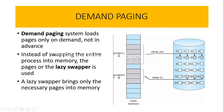The pages required by program B are swapped in. Like this, we use the concept of a lazy swapper to swap in or swap out the pages which are required or not required by the program. This is the basic concept of demand paging.